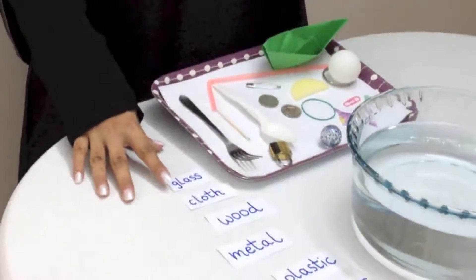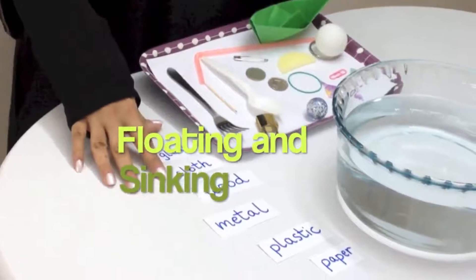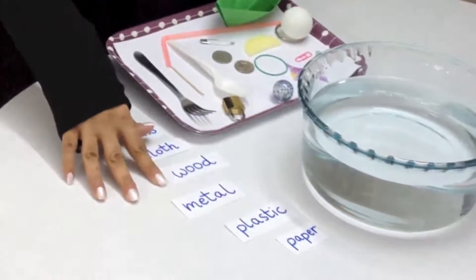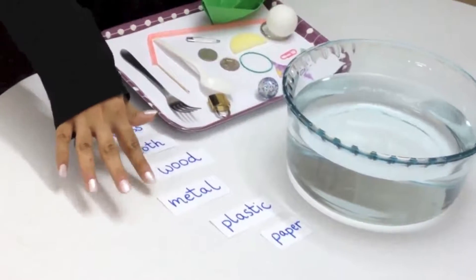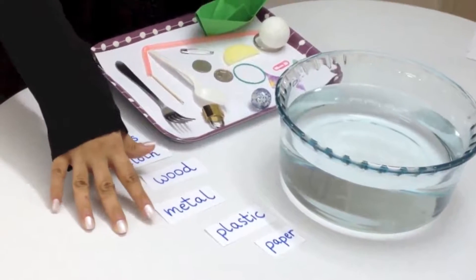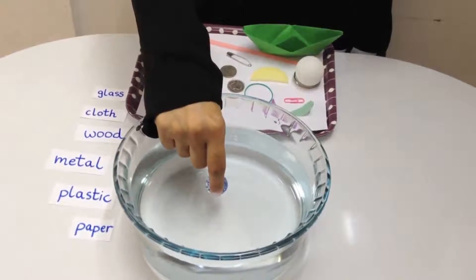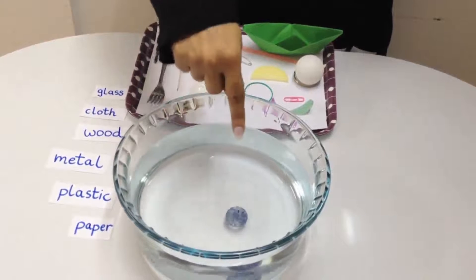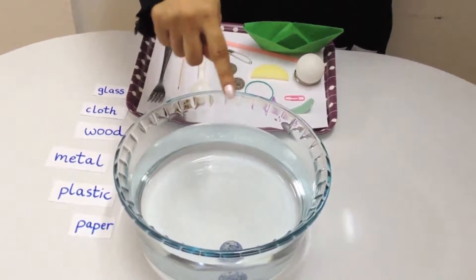I will now do a floating and sinking activity with different types of materials. I have different objects that are made of glass, cloth, wood, metal, plastic, and paper. I'm putting a marble made of glass into the bowl and you can see that it has sunk. It has gone to the bottom.